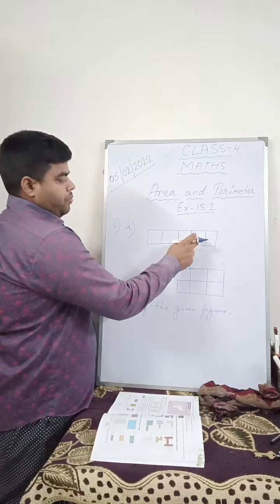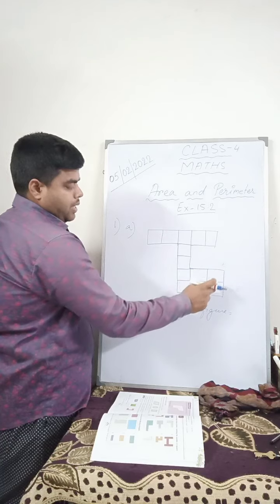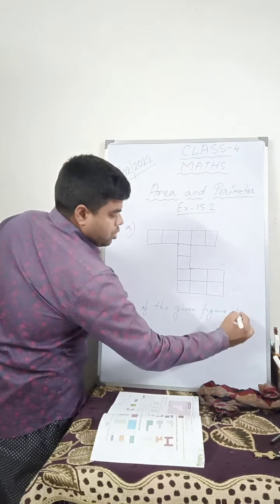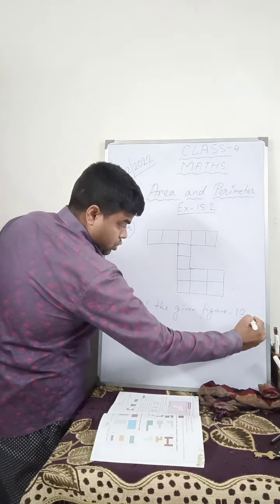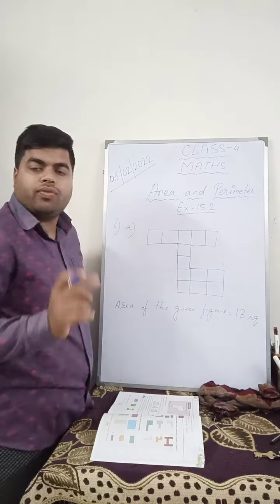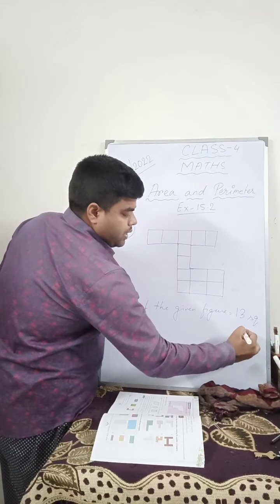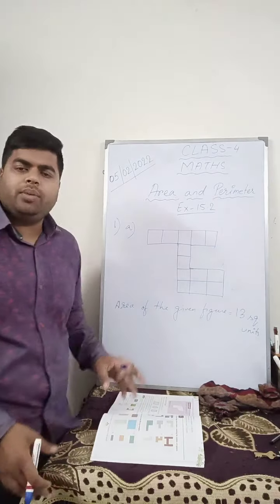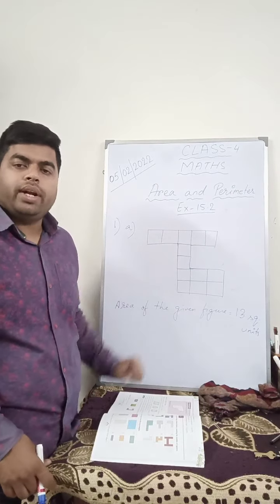1, 2, 3, 4, 5, 6, 7, 8, 9, 10, 11, 12, 13. So this will be 13 square units. SQ means short form of square units. Because they did not give you any unit - no centimeter, no decimeter, nothing. So you will write unit.